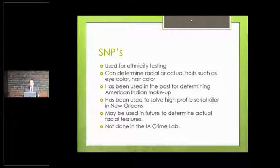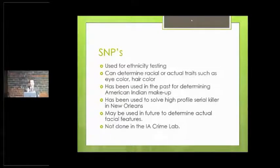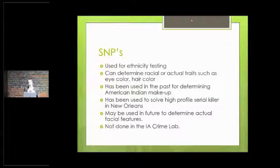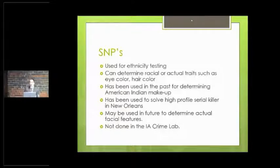The initial workup of SNPs was done by a company in Florida to actually identify American Indians. I think if you are one-fifth American Indian, you can qualify for aid from different tribal groups. So that's really kind of how some of this was started — from an economic standpoint. We do not do this in the crime lab.